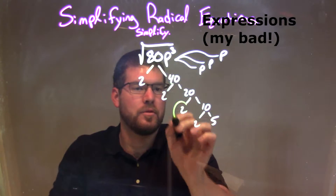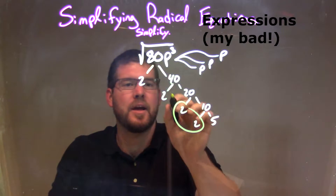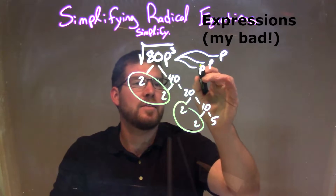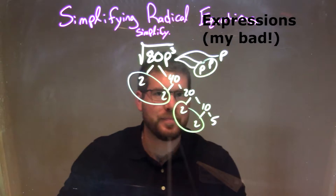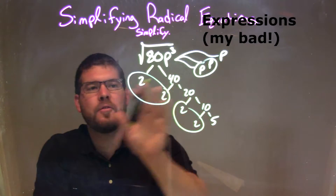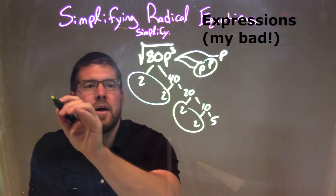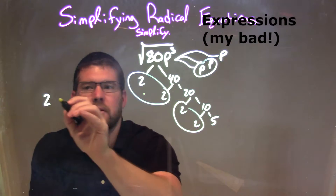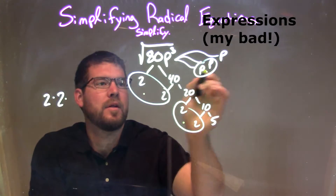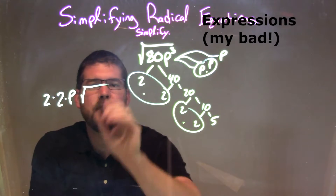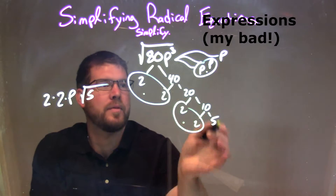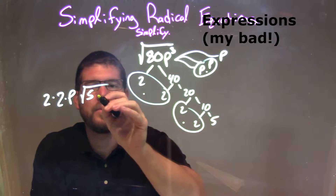Let's circle our pairs. I have a pair of twos right here, and I have a pair of another twos right there. And the p's — I have one pair of p's right there. So every single pair, I'm going to put outside of our square root: a 2 for the first pair, times this 2 for the second pair, times this p. Inside the square root is just the non-circled ones — the 5 and the p, so 5 times p.